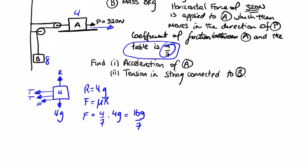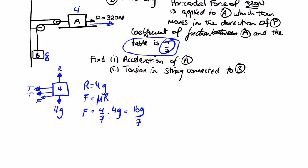Then we can say that using force equals mass times acceleration, the force going to the right is 320 to begin with. We'd have to take away what's going left, which are these three guys here. So 320 minus 2T minus 16g over 7 is equal to ma, and the m is 4a.